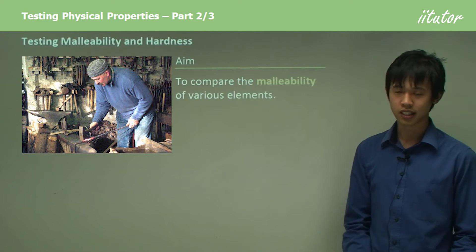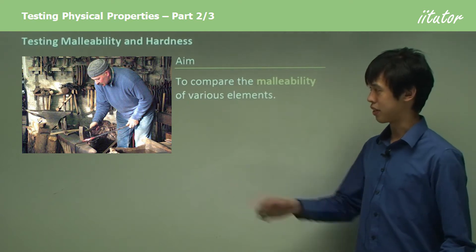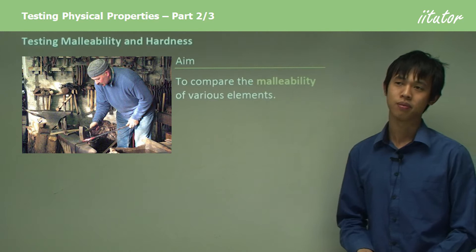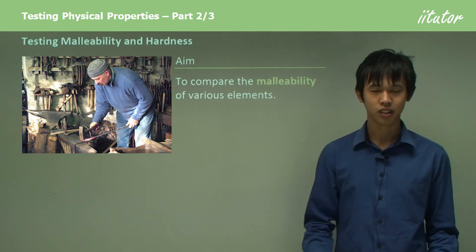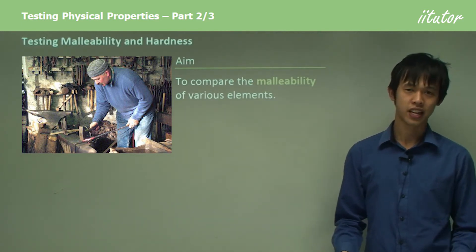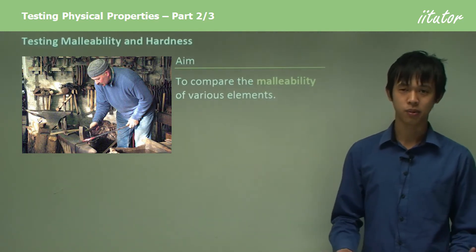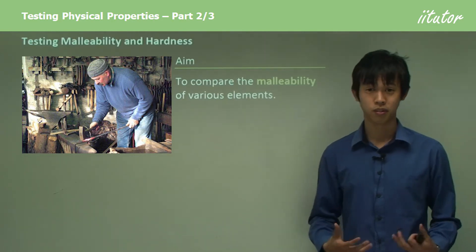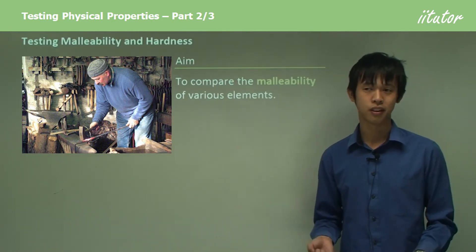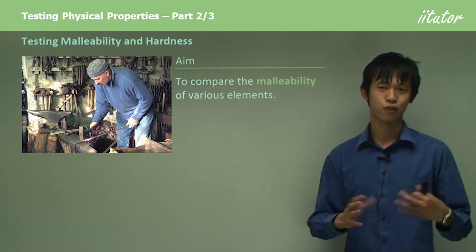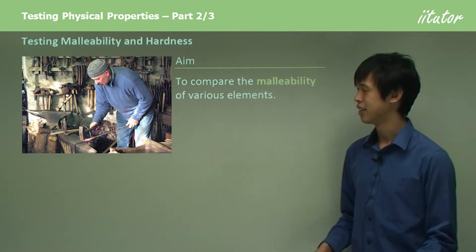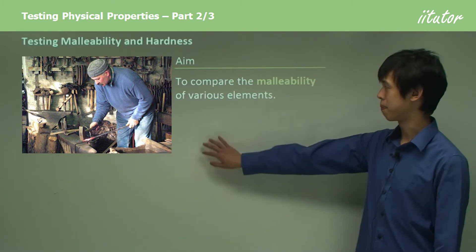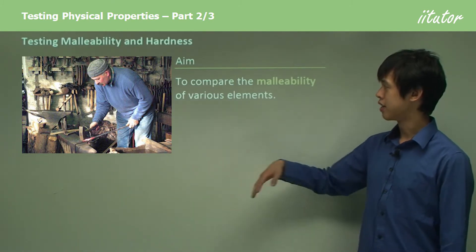The whole point of malleability is what this guy is doing here — smithing something. In the olden times when knights would run around and fight each other, they'd wear armor. The only reason you could get armor is because the metal it's made out of is malleable. If you heat it and then hit it, it will form the right shape, and that was quite an art form back in medieval history.